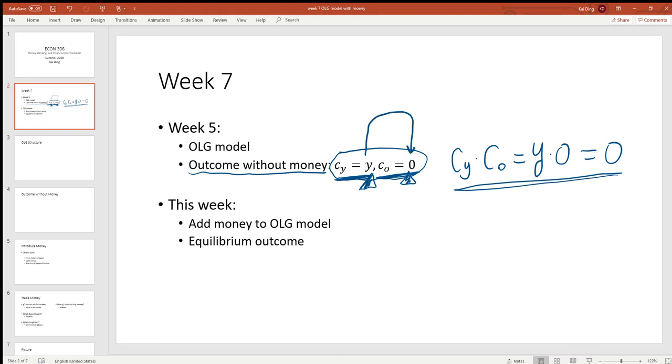Saving for retirement would help. This week we're going to add or introduce money to the OLG model, and we're going to characterize the equilibrium outcome with money. As you can see later on, with money we're able to achieve some kind of saving.